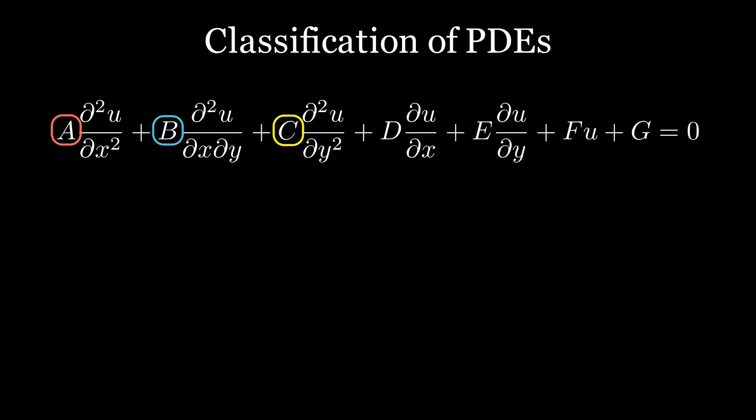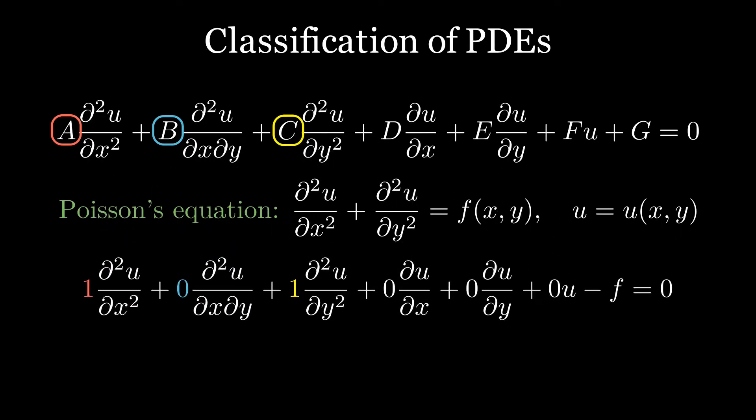Another example can be the 2D Poisson equation, where U is a function of different space coordinates, meaning that the function U is stationary and doesn't evolve over time. Comparing the equation with the general form reveals that B squared minus 4AC is negative, demonstrating that the equation is elliptic.